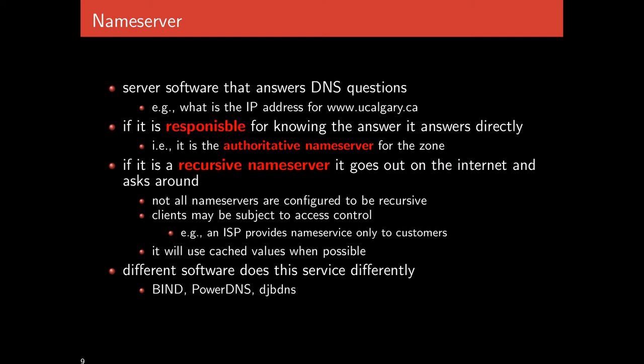Core to DNS is the notion of a nameserver — the software that answers DNS questions, like what is the IP address for www.ucalgary.ca. If a nameserver is responsible for knowing that information, it answers directly — it's known as authoritative. It's the authoritative nameserver for the zone, and it has its own database of every machine and their IP addresses within its zone.